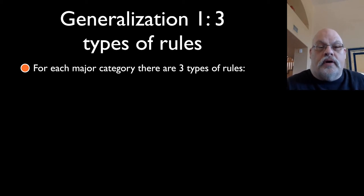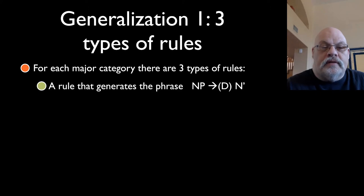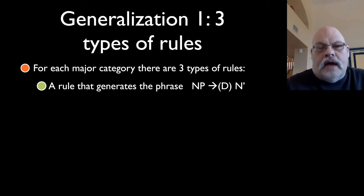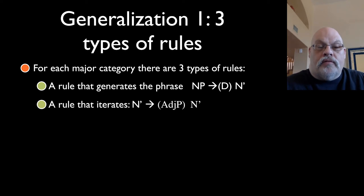So, let's talk about generalizations across the rules. For each major category, there are three kinds of rules, and we're going to have special names for these. The first kind is the one that sits right on top and introduces the phrase on top of the rest of the sentence. We've only seen one that's really productive. That's the rule that introduces the determiner and takes an n-bar as the next element.